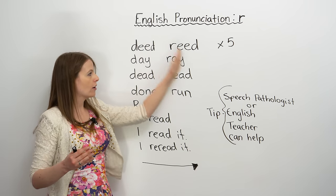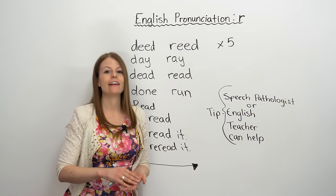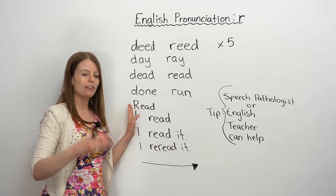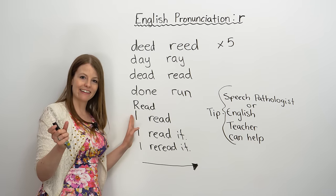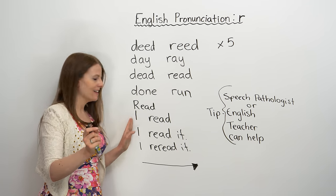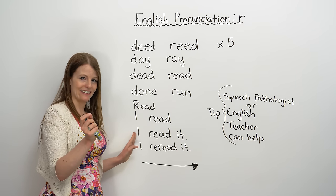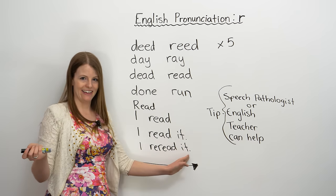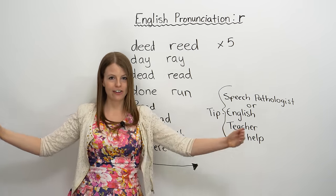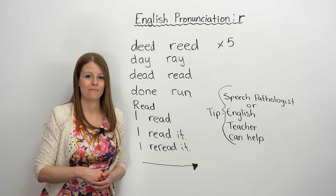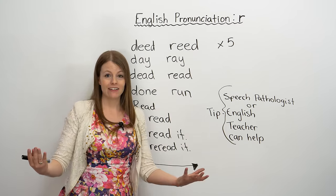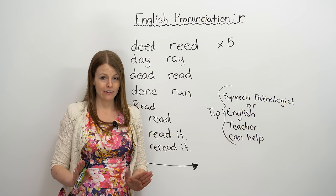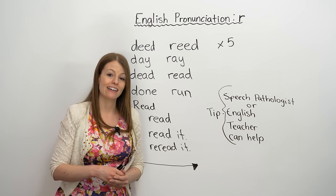Once you're able to say R words, the next step is to try to say them in a sentence. You can say the word first — read — and once you get good at saying this word, try it in a short sentence: I read. Then make it a little longer: I read it. Then make it even harder: I re-read it. And so on — you can make it longer and longer as you get better and better at your pronunciation of R. These are just some tips to help you, and it takes time. Practice makes perfect. Finding somebody who can listen to make sure you're saying it right is very helpful.